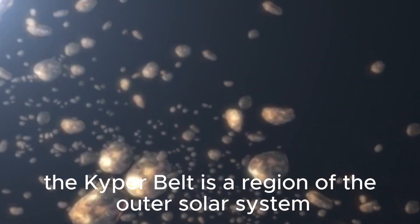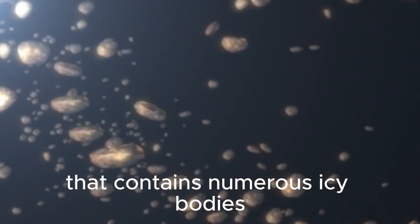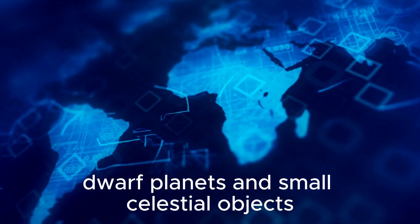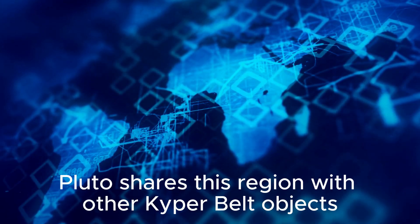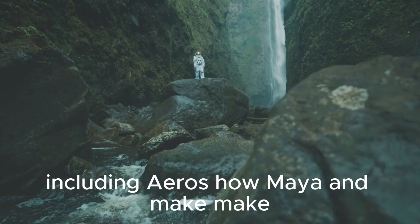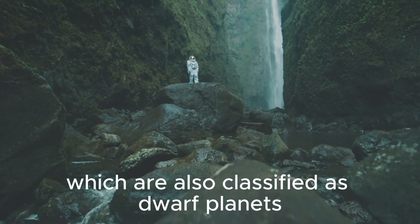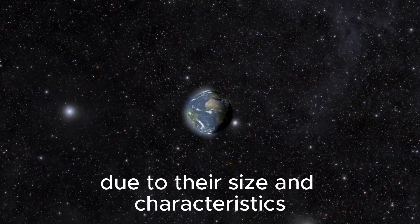The Kuiper belt is a region of the outer solar system beyond the orbit of Neptune that contains numerous icy bodies, dwarf planets, and small celestial objects. Pluto shares this region with other Kuiper belt objects, including Eris, Haumea, and Makemake, which are also classified as dwarf planets due to their size and characteristics.